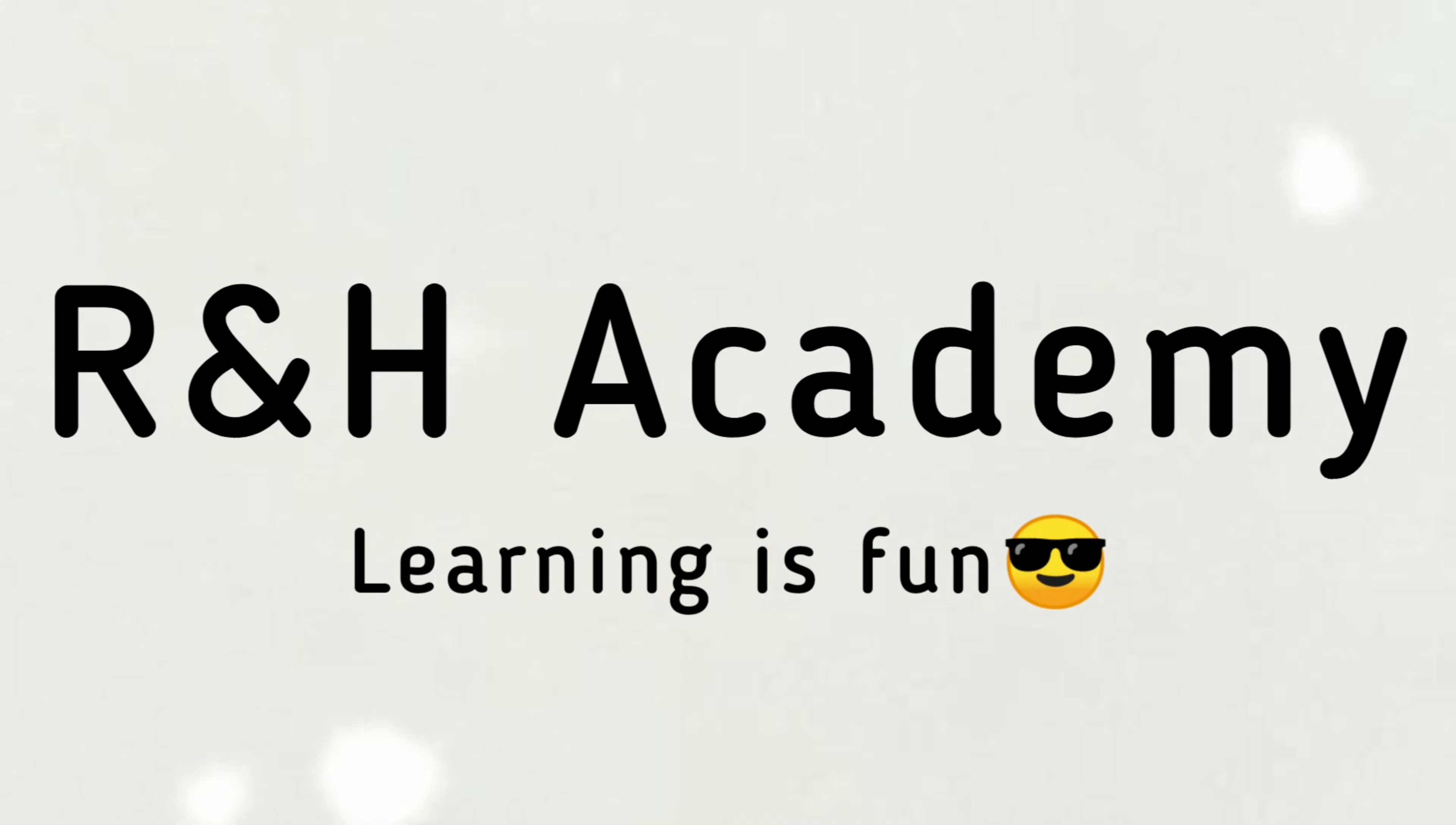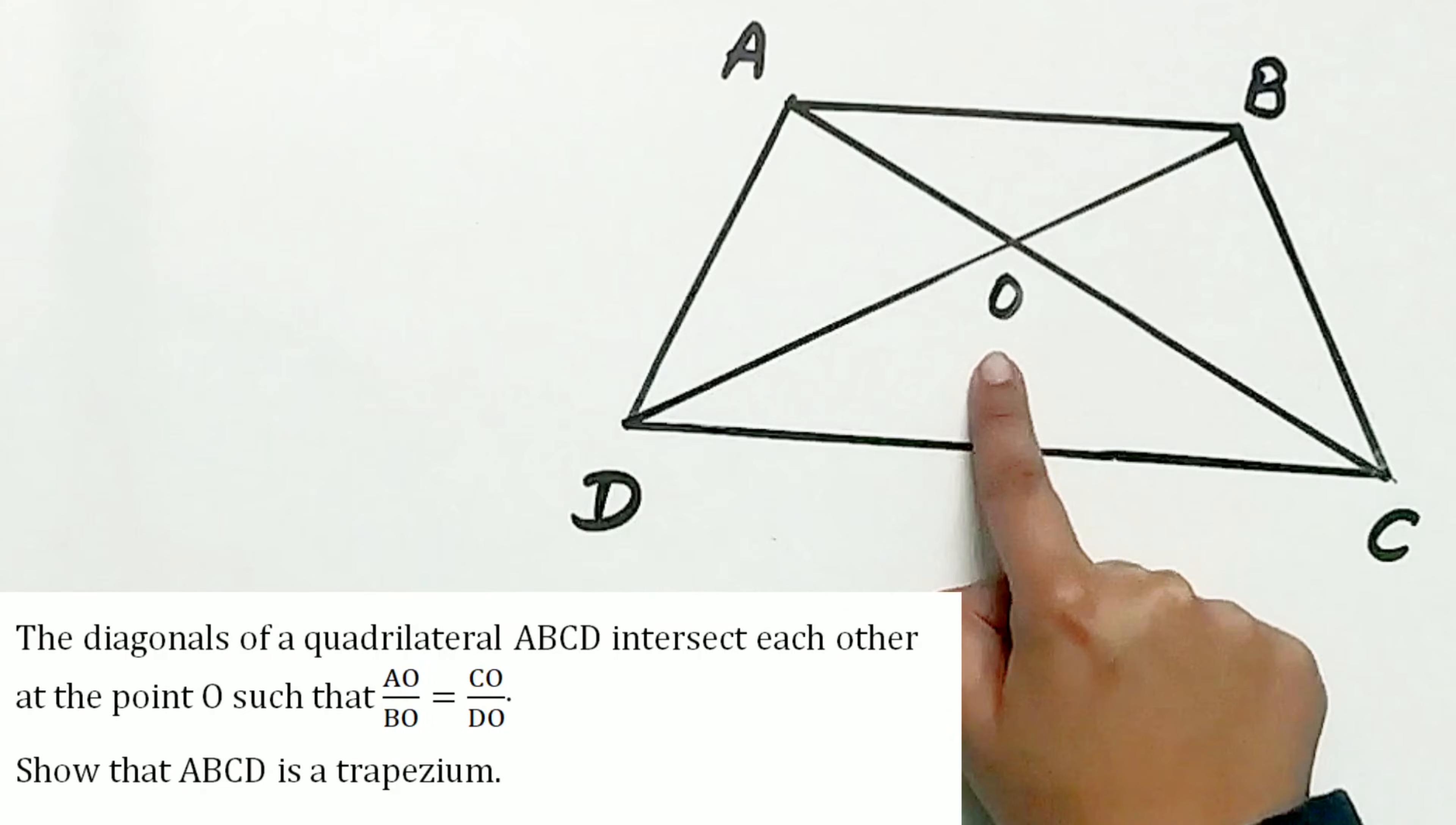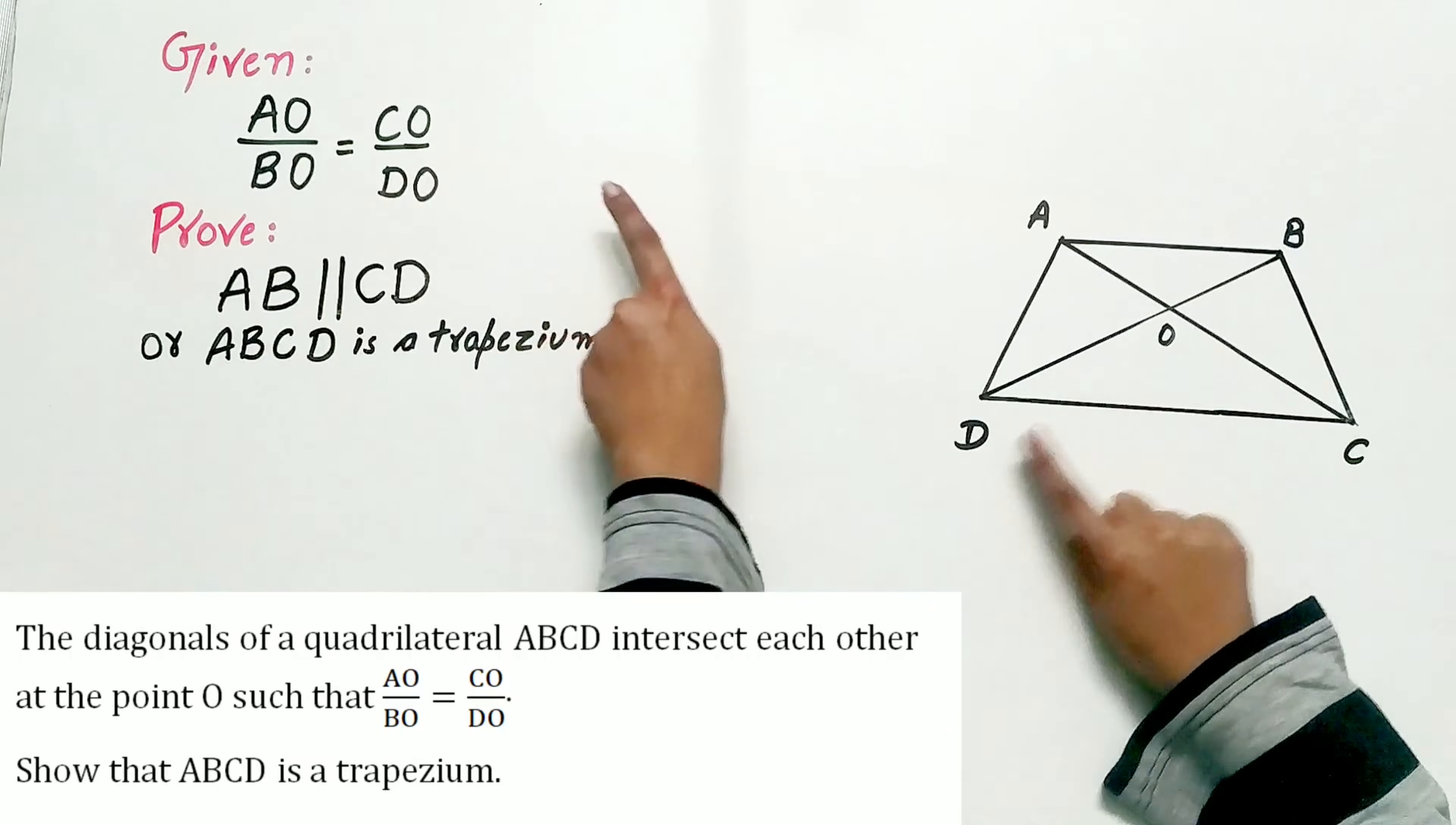Welcome to RNH Academy channel. Question 10 of exercise 6.2 says, the diagonals of a quadrilateral ABCD intersect each other at point O such that AO by BO is equal to CO by DO.